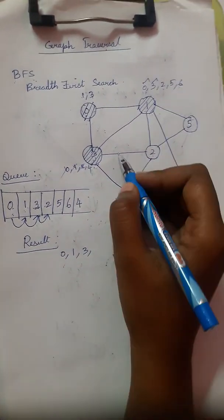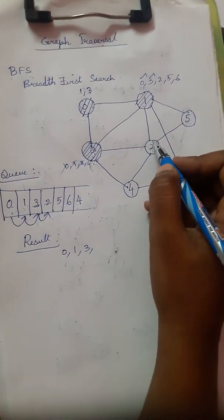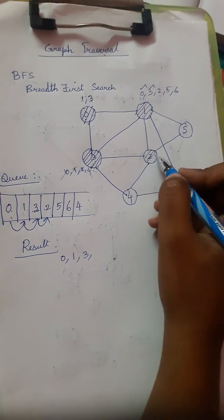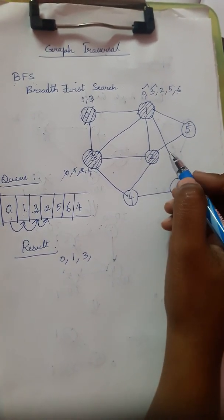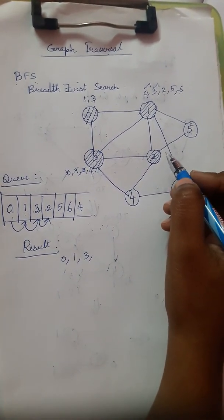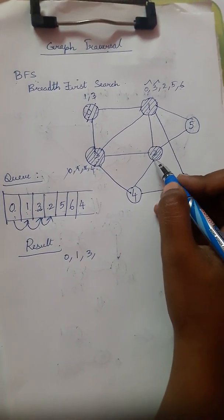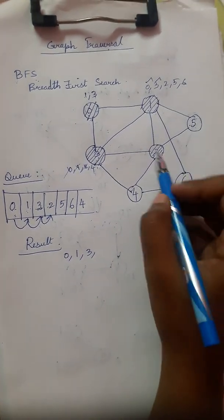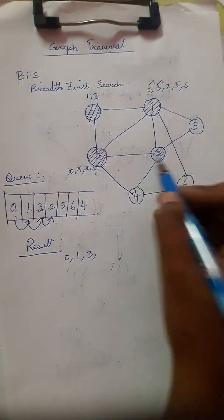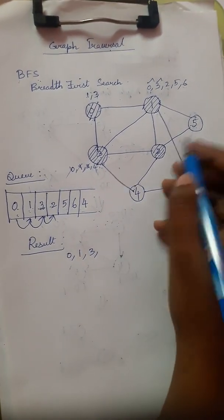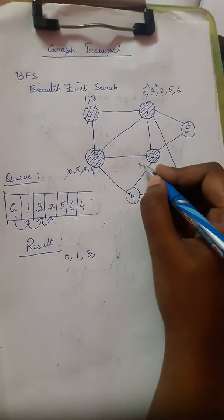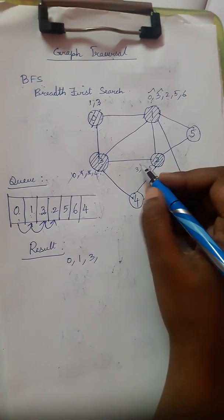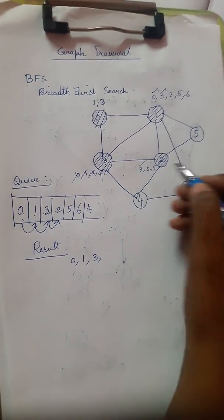The result so far is: visited nodes 0, 1, 3. Next we visit node 2. Adjacent elements for node 2 are 3, 4, and 5. Node 3 is already visited; we continue checking nodes 4 and 5.